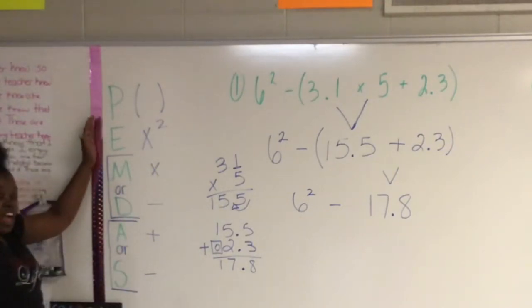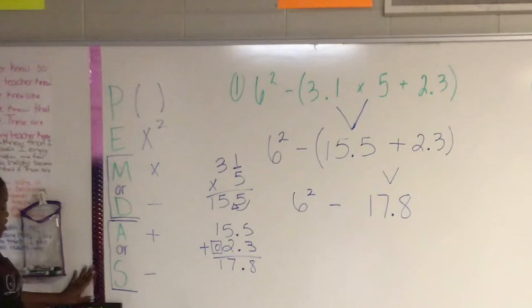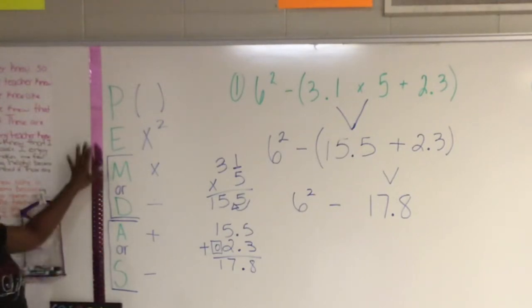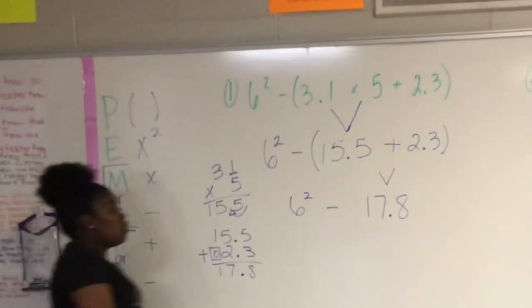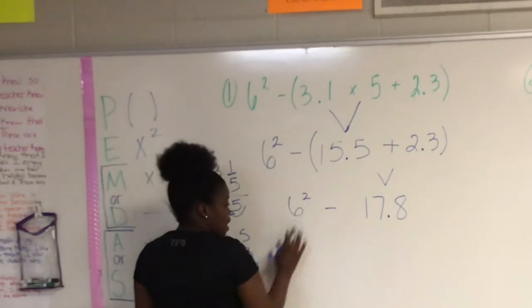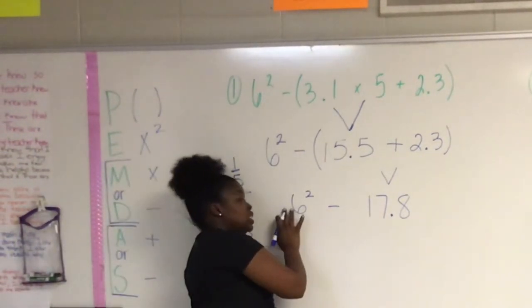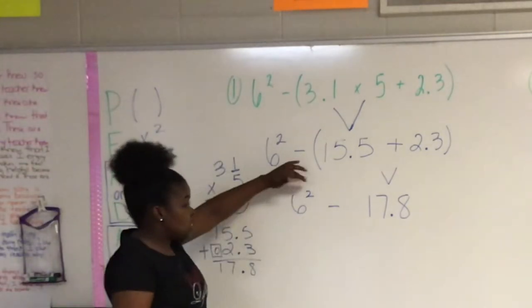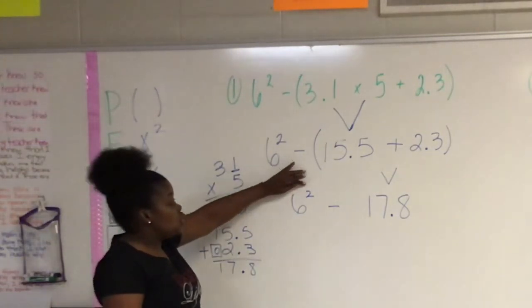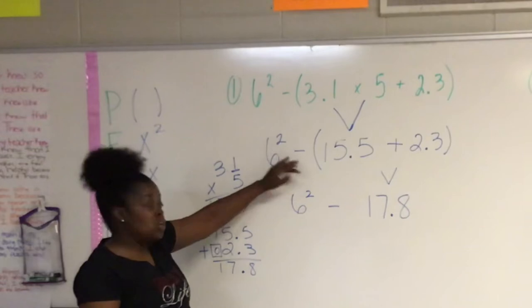All right. The next thing that you should see is exponents. So I need to figure out what 6 squared is. Now, when you're dealing with exponents, 6 is your base and 2 is your exponent. The 2 tells you how many times that you'll multiply your base.